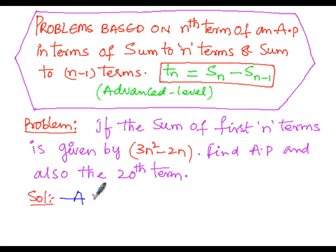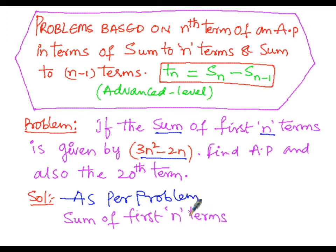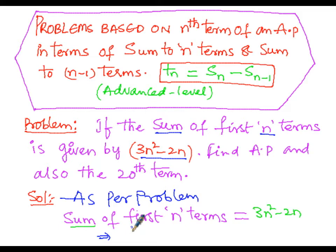As per the problem, the sum of first n terms is given. So S(n) equals 3n squared minus 2n.